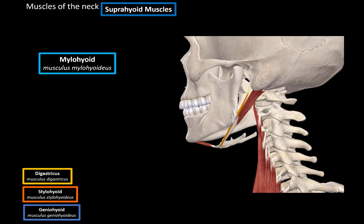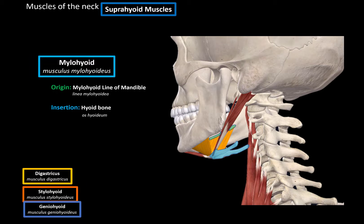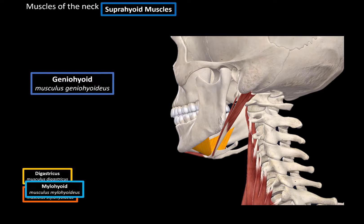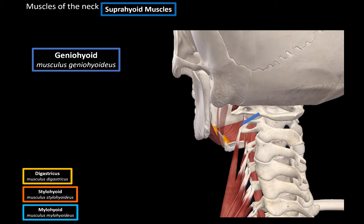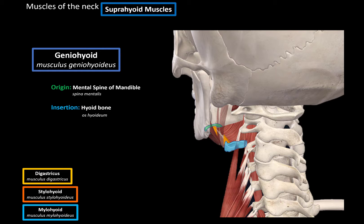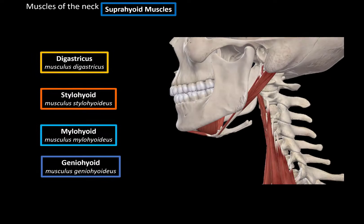Next we have the mylohyoid muscle, which originates from the mylohyoid line of the mandible and inserts at the hyoid bone. Then we have the geniohyoid muscle, located just on top of the mylohyoid, which originates from the mental spine of the mandible and inserts at the hyoid bone. Those are the suprahyoid muscles.